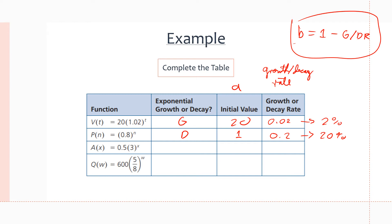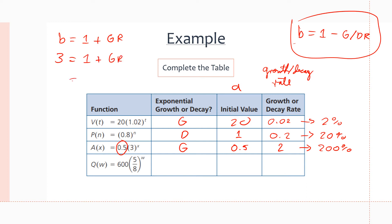Next: a(x) = 0.5 · 3^x. This time we have a b value of 3, meaning we are tripling our amount each successive time, so it's growth. The initial value is 0.5. Since b = 1 + growth rate and b = 3, the growth rate is 2, which is 200% — we are adding 200% to what we already have.